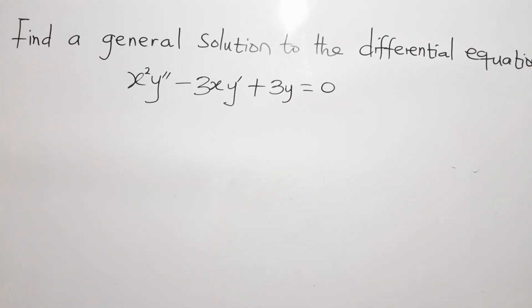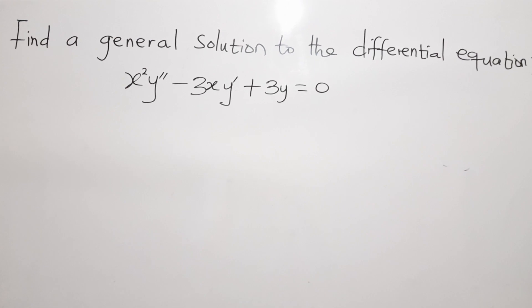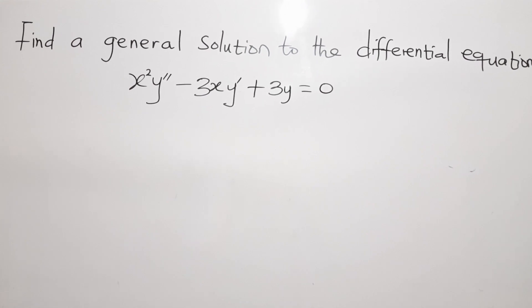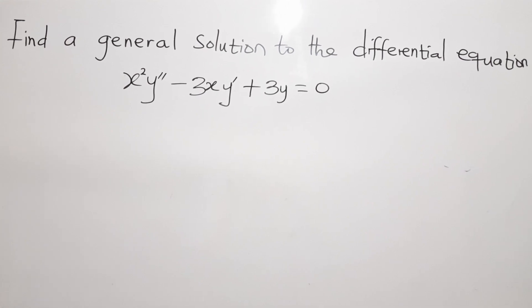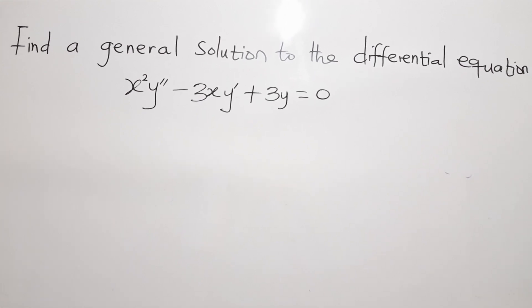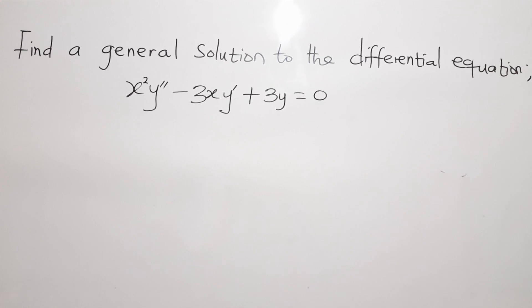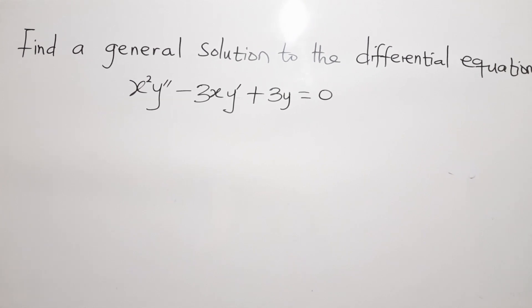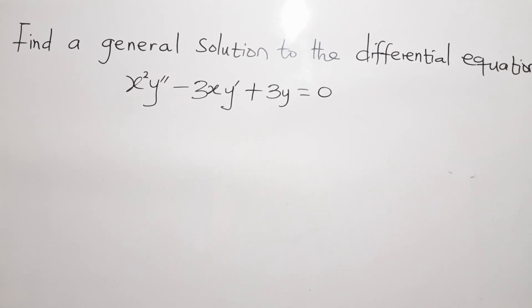Or in other words, x squared times the second differential of y, minus 3x times the first differential of y, plus 3y equals 0.